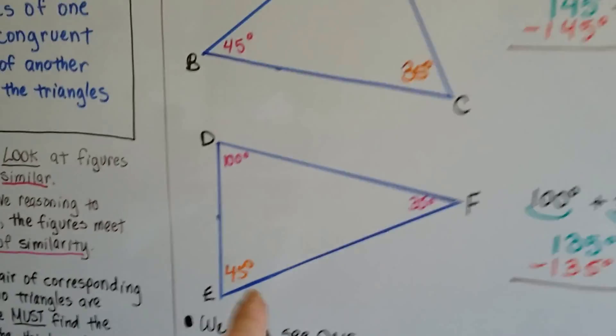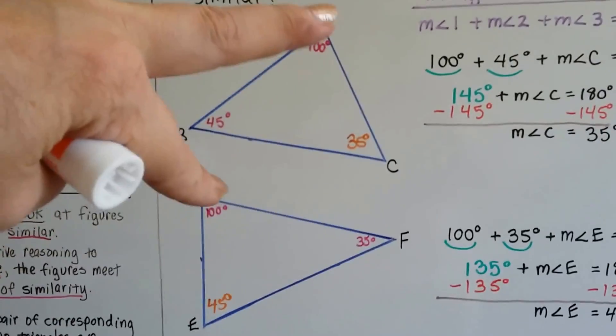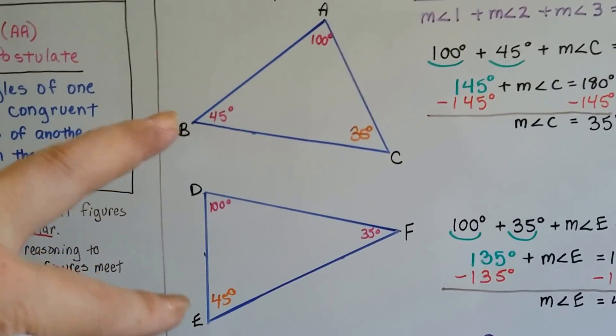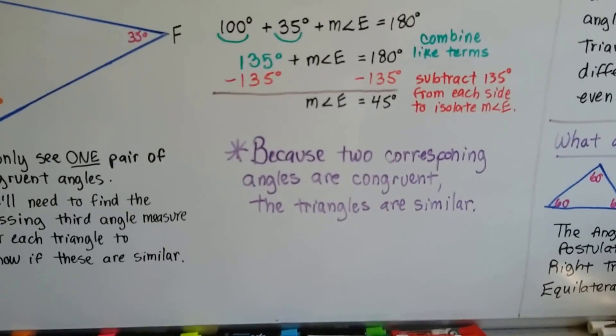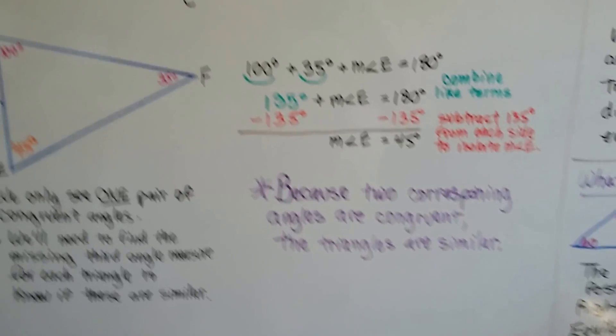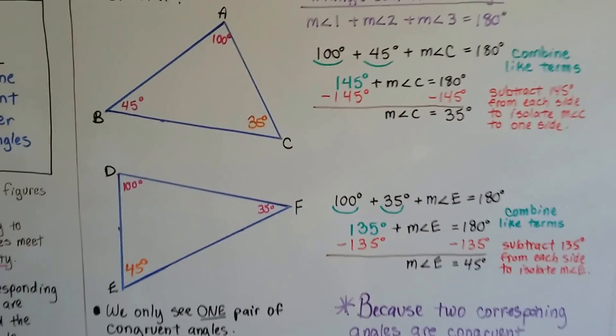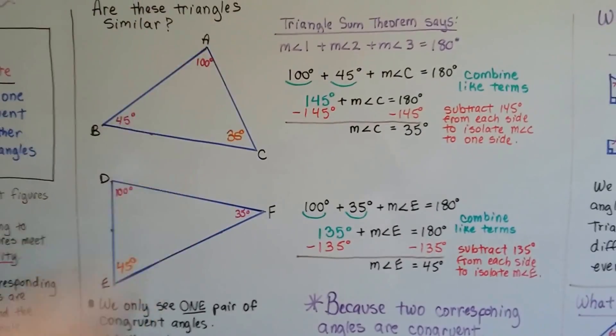Now look, we've got 100 degrees, 35 degrees, and 45 degrees. Because at least two corresponding angles are congruent, the triangles are similar. And we've proven it. We know that it's true now.